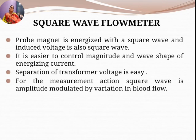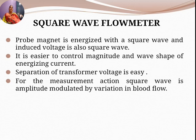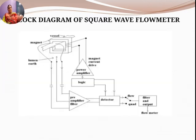When the probe magnet is energized with a square wave and the induced voltage is also a square wave, that type is called a square wave electromagnetic flow meter. It is easier to control the magnitude and wave shape of the energizing current, and separation of transformer voltage is also easier. For the measurement action, the square wave is amplitude modulated by variation in the blood flow.